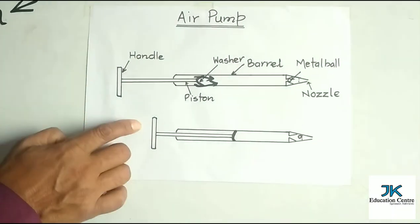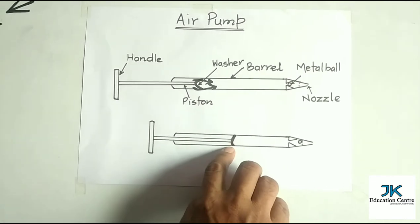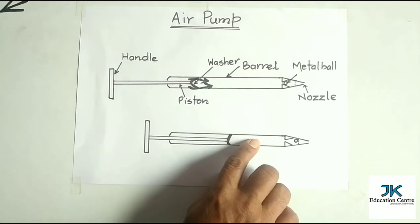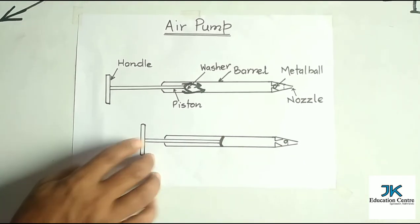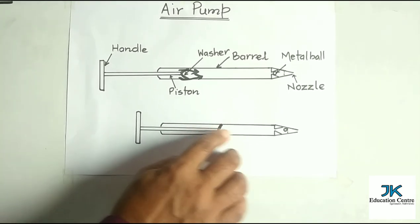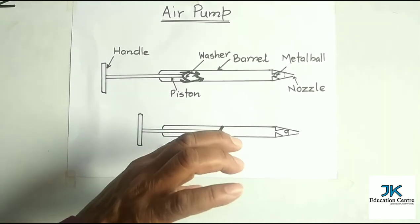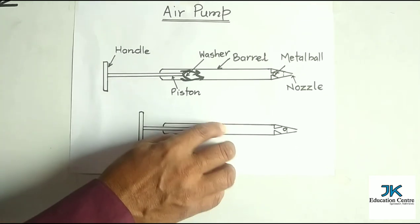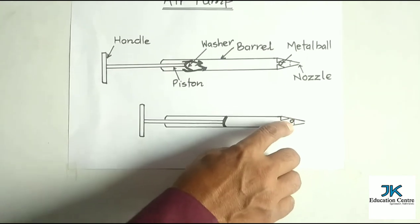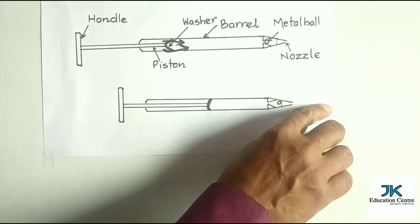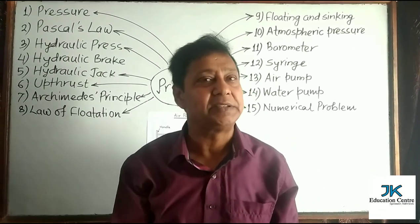When the handle is pushed forward, the volume of the barrel in front of the washer decreases — when volume decreases, pressure increases. Now air tends to move out from the nozzle, and also tends to move backward. On the back side, the high air pressure closes the edges of the washer against the inner wall of the barrel, so it doesn't allow air to go out from the back side. This air pressure pushes the metal ball forward, and since the metal ball cannot cover the whole nozzle, air comes out from the nozzle. This is how the air pump works.